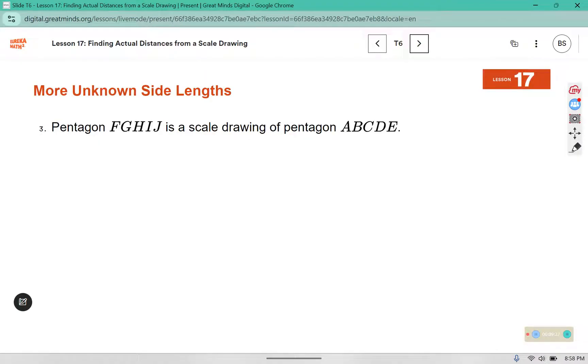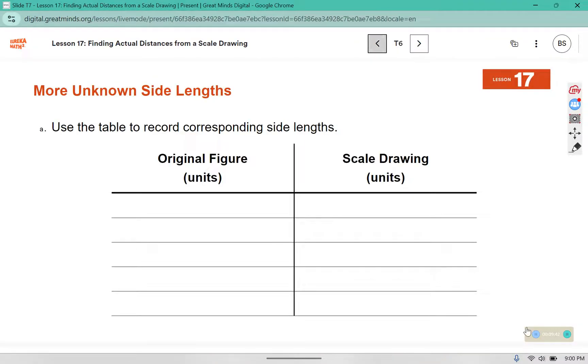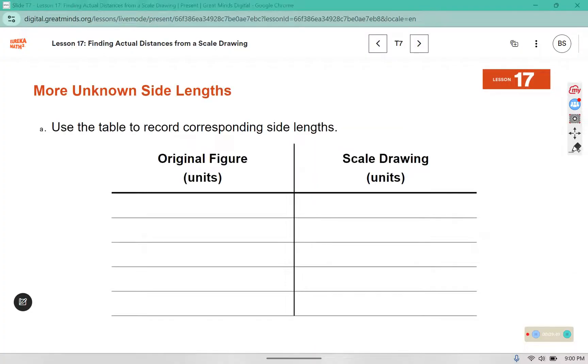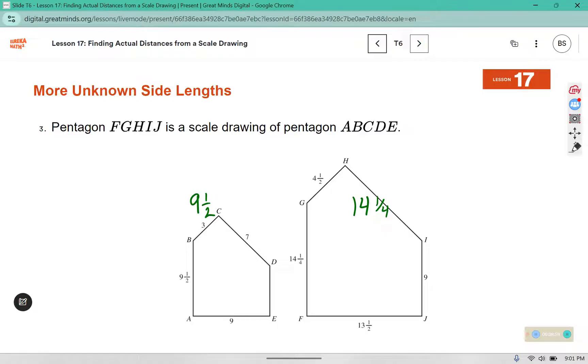Pentagon FGHIJ is a scale drawing of pentagon ABCDE. So we are going to create a table that involves the corresponding side lengths. So in the original figure, we have a 9 and 1 half that corresponds to a 14 and a quarter. And we have a 3 which corresponds with 4 and a half.